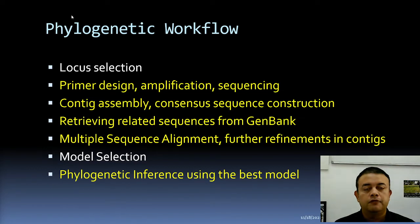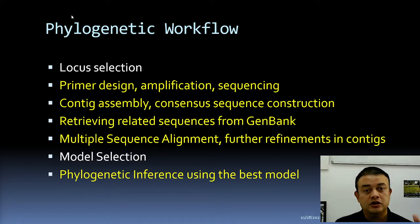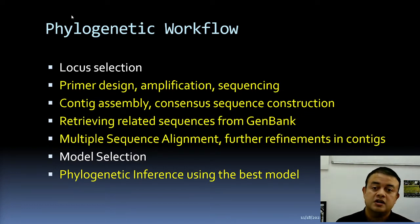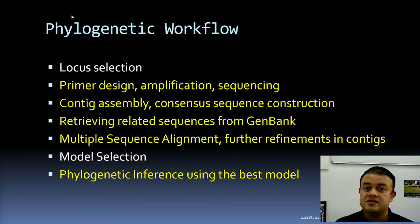This is the normal workflow in phylogenetics: first, you select and choose a locus; then you design a primer or choose a generic primer already designed by someone else; then you amplify it; and then you sequence it — Sanger sequencing usually.